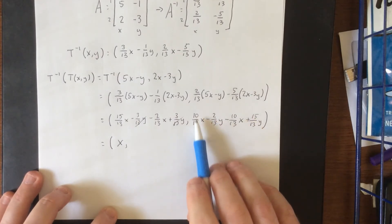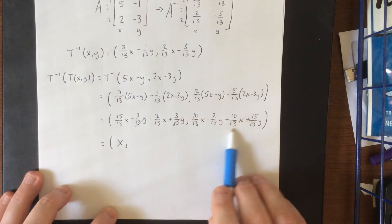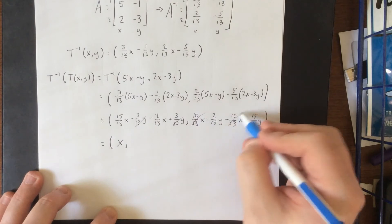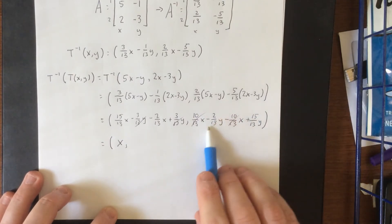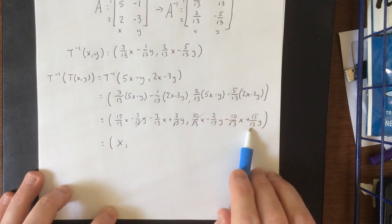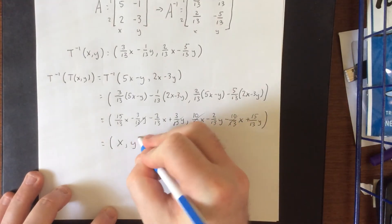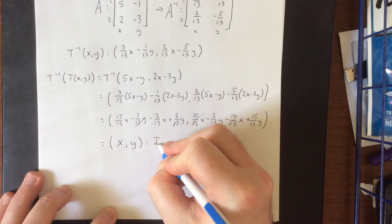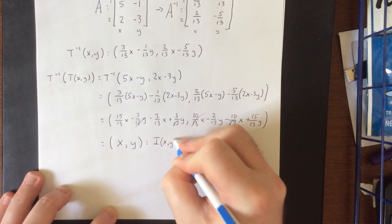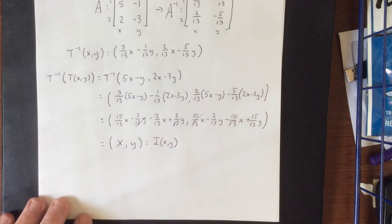For the second component, I see 10/13 x minus 10/13 x. Those will cancel out. I also see minus 2/13 y plus 15/13 y, that would be 13/13 y, which would be y, which is equal to the identity transformation in R², which is exactly what we were supposed to get.